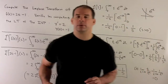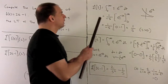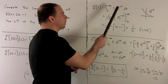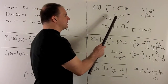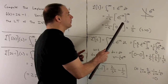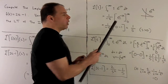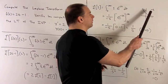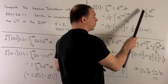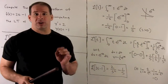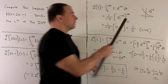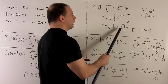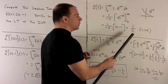Let's compute L{t} and L{1} separately. For the Laplace transform of 1, we put 1 in for f of t and take the antiderivative of e to the minus st. A u-substitution gives 1 over minus s times e to the minus st, evaluated from 0 to infinity. We need s greater than 0; in that case the exponential has a negative exponent, so as t goes to infinity it goes to 0. Taking the limits gives 0 minus 1 over minus s, which is 1 over s.